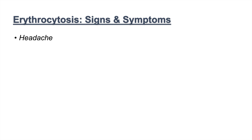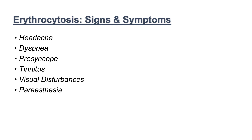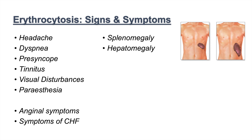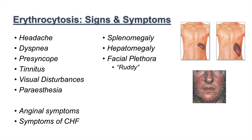Signs and symptoms of erythrocytosis include headaches, dyspnea, presyncope, and tinnitus — all related to elevated red blood cell mass causing hypertensive-like symptoms. There may also be visual disturbances, paresthesias (tingling and numbness in hands and feet), angina, chest pain, and symptoms of congestive heart failure. Splenomegaly can occur as the spleen compensates by increasing red blood cell destruction, and hepatomegaly, facial plethora, and palmar redness may also be present.